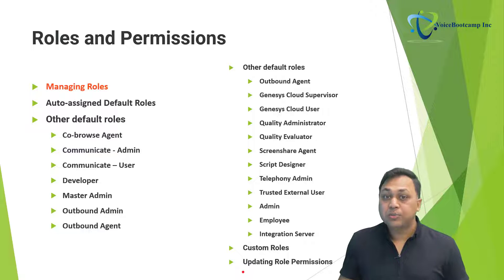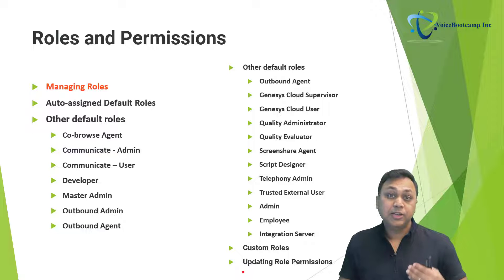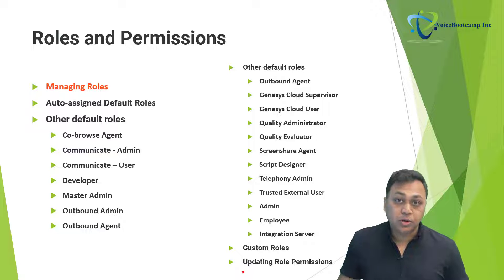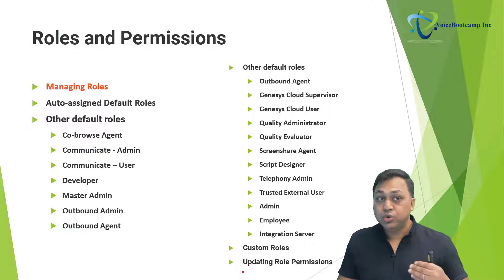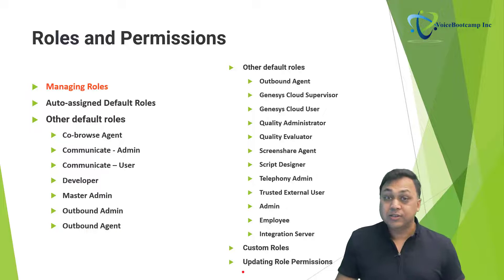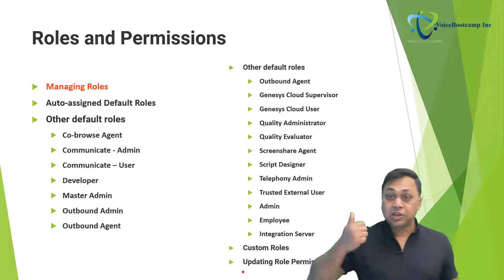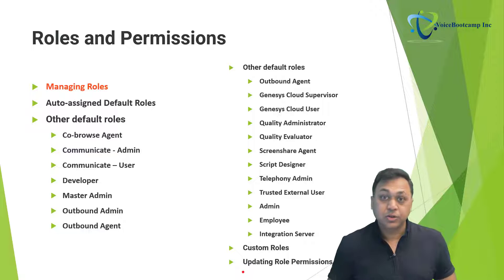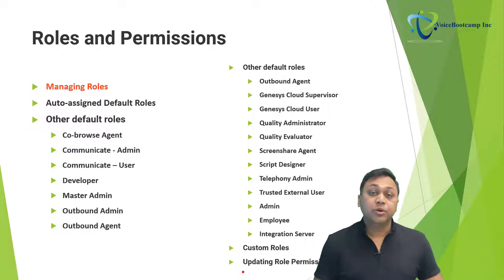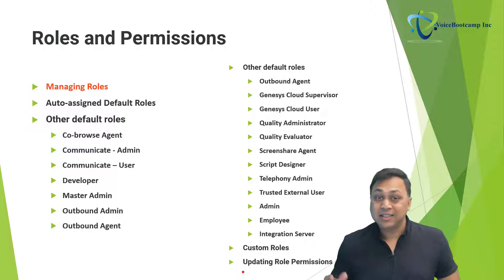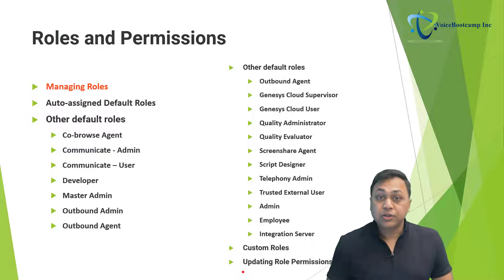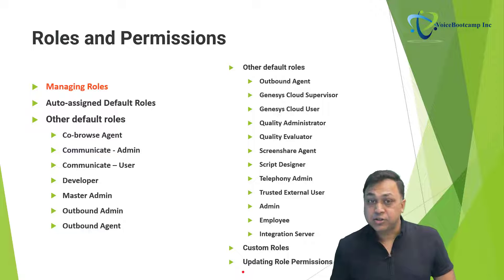The outbound agent role is for agents responsible for outbound calls, and also requires a Genesys Cloud 2 license. Remember from the previous chapter, there are Genesys Cloud 1, 2, and 3 license tiers. To use the supervisor role for supervisor functions, you need at minimum the basic Genesys Cloud license for end users, and you can also use the communicate or Genesys Cloud license for that matter.